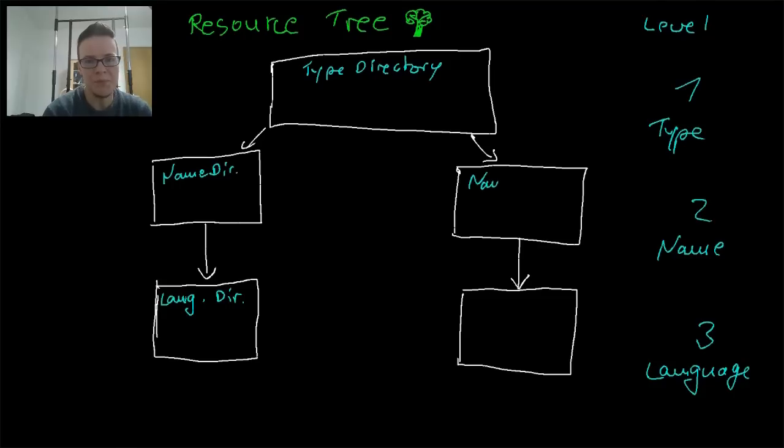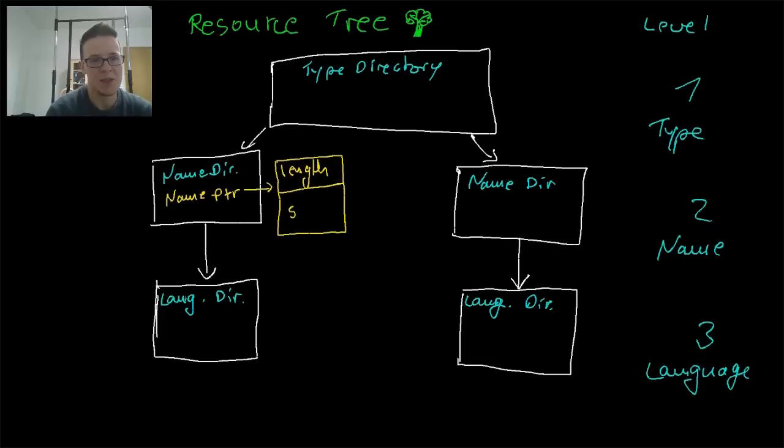So the name directory has a name identifier or a name pointer. So if it's a pointer, it points to an address of a string, a Unicode string. The string can be anywhere in the file. And the parser needs to know how long that string is. So it will start with the length of the string and then there will be the actual Unicode string, which is the name of the resource.